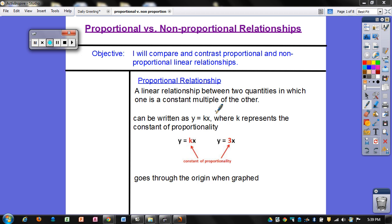A proportional relationship is between two quantities in which one is a constant multiple of the other. It is written like this, y equals kx, where k is called the constant of proportionality.